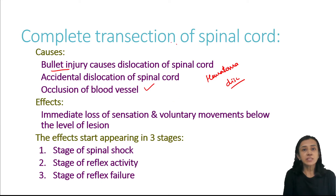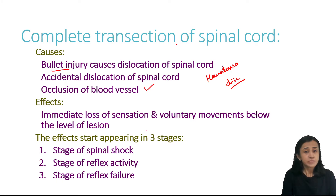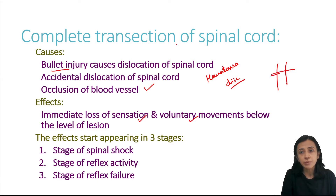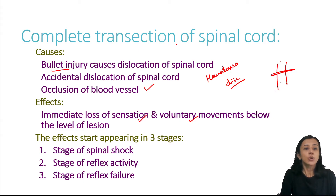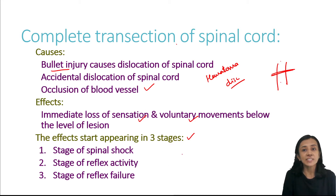Immediately when there is complete transection, the person feels as if he or she is divided into two halves. There is immediate loss of sensation as well as voluntary movement below the level of transection. These effects appear in three stages: stage of spinal shock, stage of reflex activity, and stage of reflex failure.